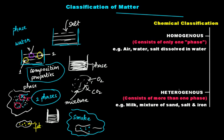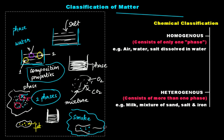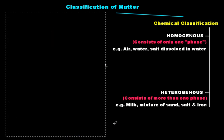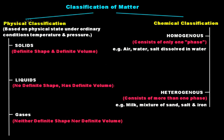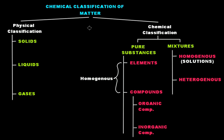So the chemical classification is homogeneous and heterogeneous. But it's not a very good way of classification. A better chemical classification of matter divides it into two groups: pure substances and mixtures. The physical classification remains solids, liquids, and gases, but the chemical classification in this case is a little bit different.